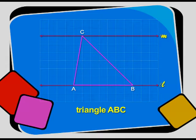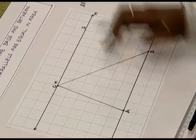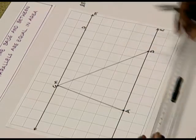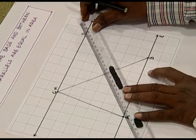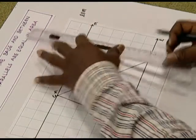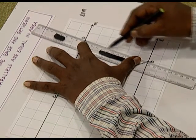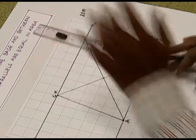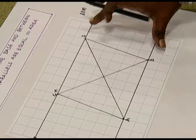Now we take another point D on line M and join AD and DB. Children, you can observe that we now have two triangles ABC and ABD on the same base and between the two parallel lines.